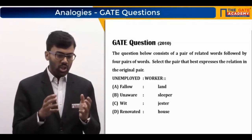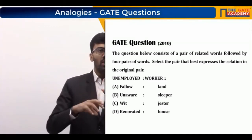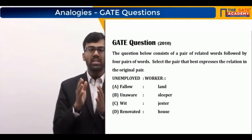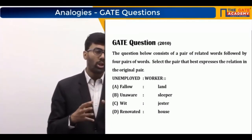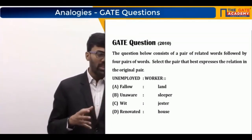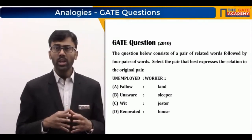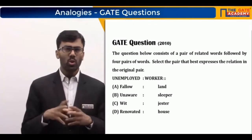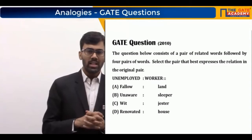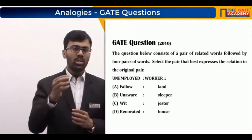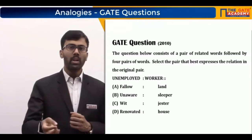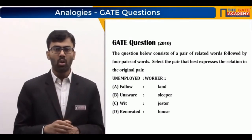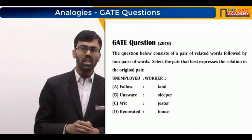Option C says 'wit : jester.' A jester is a person who performs in a witty, humorous manner, so wit is a quality of a jester. It does not mean the jester is not using that quality or is in an unemployed state. Option B is 'sleeper : unaware.' A sleeper and unaware are somewhat unrelated — a sleeper is not necessarily someone who is unaware.